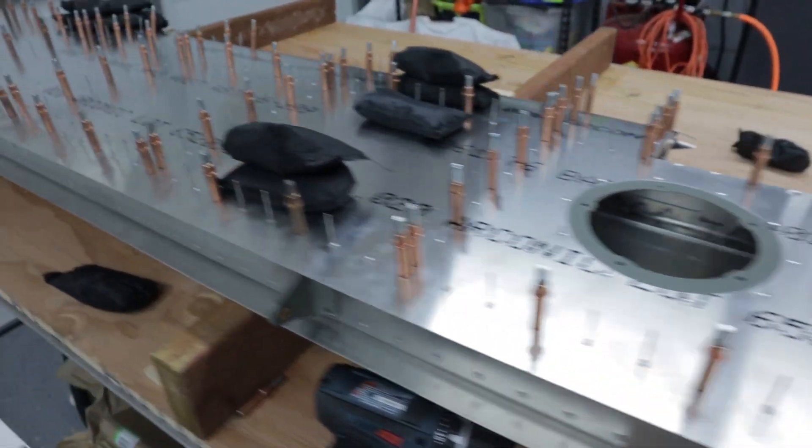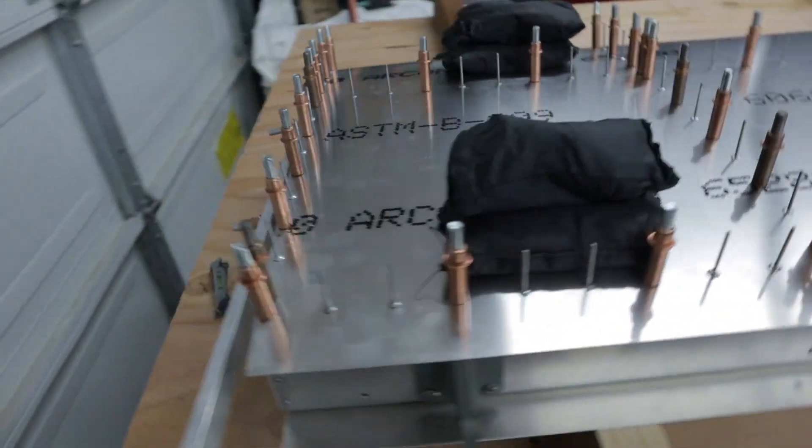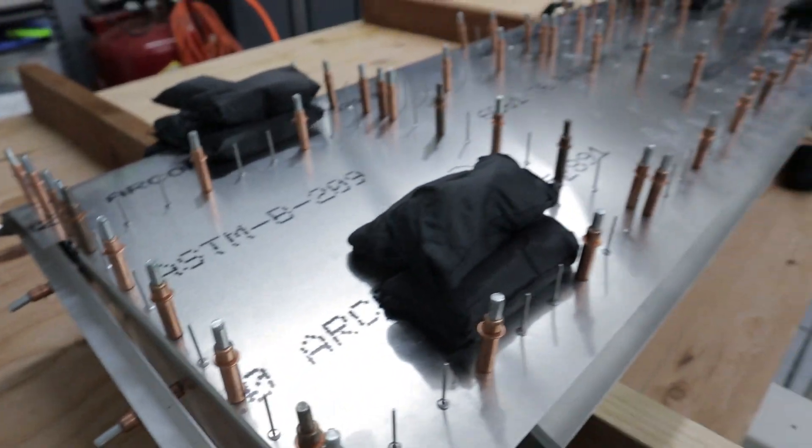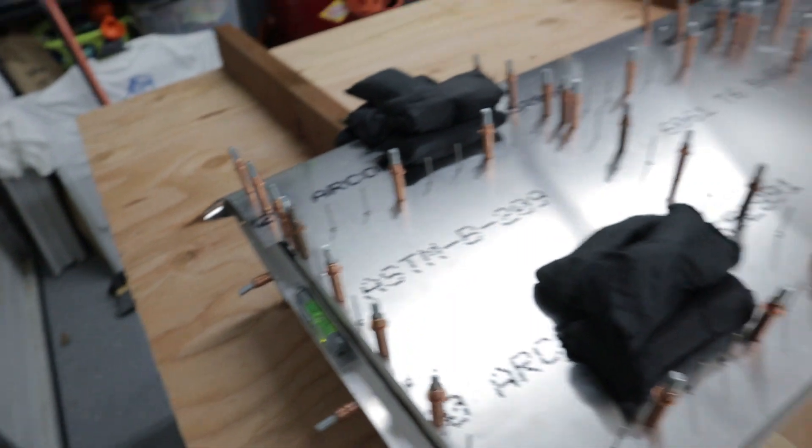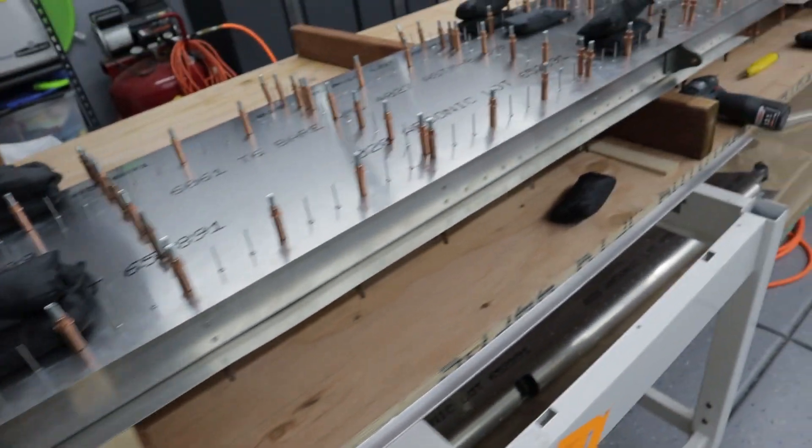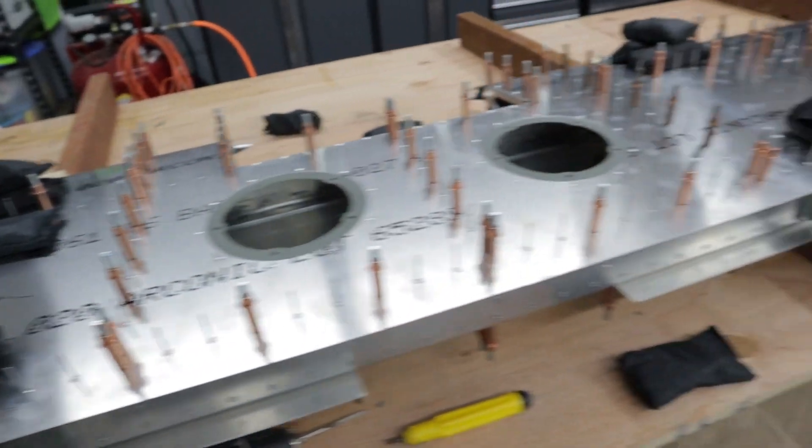Here's the horizontal stabilizer. I have all the rivets placed, ready to pull them, leveled. I got some sandbags on there - I don't really think they're necessary but they're kind of just holding it down on the supports.